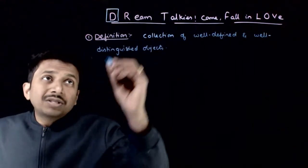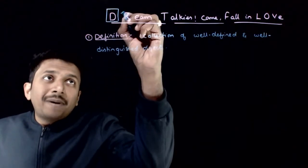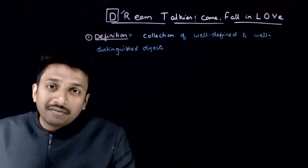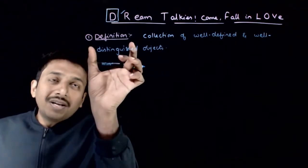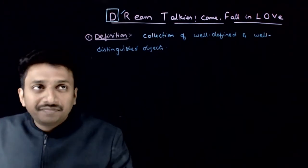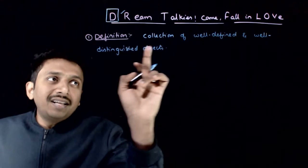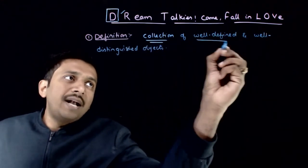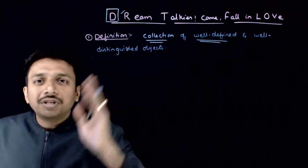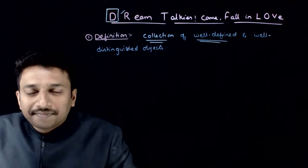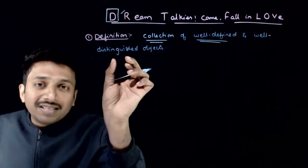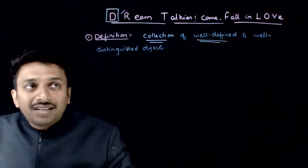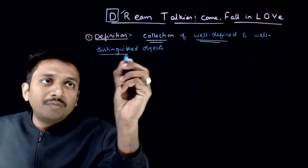Now let us go to the definition part of our code sentence. What is the definition of a set? A set is a collection of well-defined and well-distinguished objects.